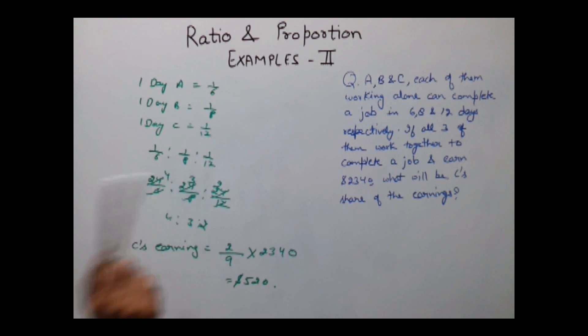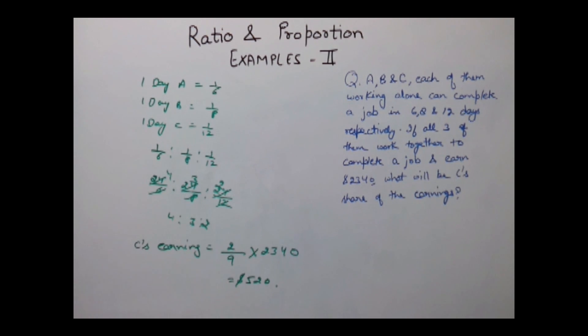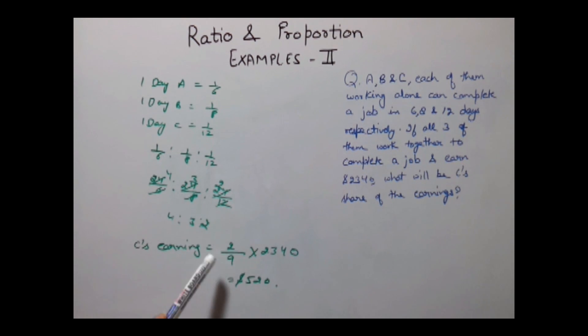By finding out their one day work we have created the ratios which is 1/6, 1/8 and 1/12. Then we have multiplied it by 24, the LCM of all these 3, so that our ratio becomes simplified which is 4, 3, 2. And after that we have found out the share of C's part in this way.